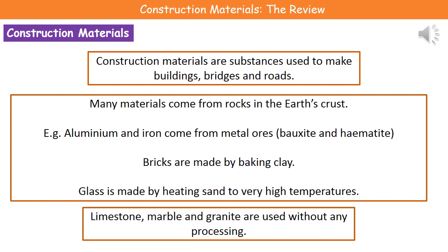Many of these materials will come from rocks in the Earth's crust. Aluminium and iron come from things called metal ores — aluminium comes from an ore called bauxite, and iron comes from an ore called hematite. If we're looking at bricks, we get clay out of the Earth's crust and bake it to make bricks. If we want to make glass, we take sand and heat it to very high temperatures. So all of those things come from rocks in the Earth's crust.